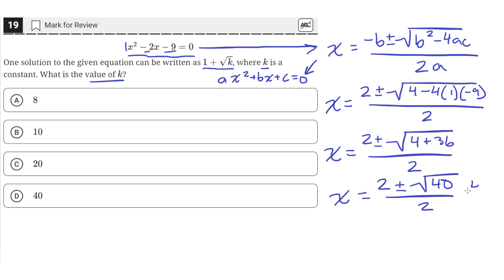Let me write that better. So this is equal to 4 times 10. And we know that the square root of 4 is just 2. So we can take that outside. So x equals 2 plus or minus 2 times the square root of 10. So we split the 40 into 4 times 10. And the square root of 4 times 10 is just equal to 2 times the square root of 10. So all of that will be over 2.